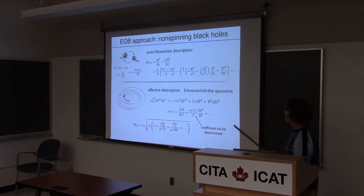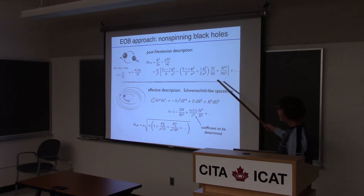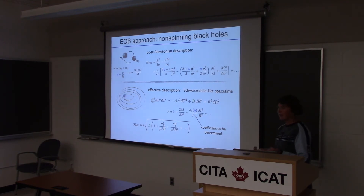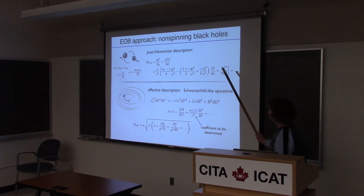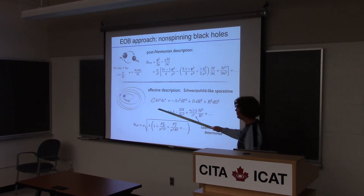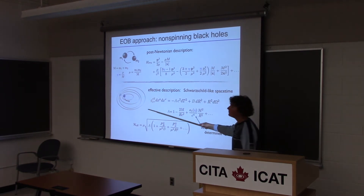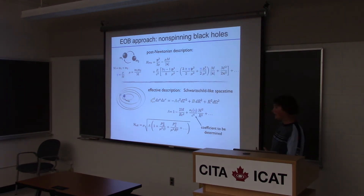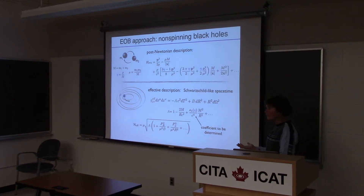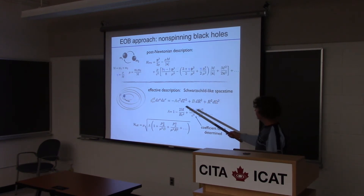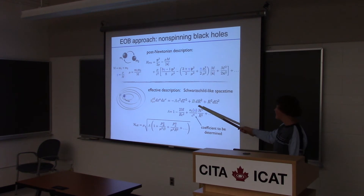Instead of dealing with this, where higher order terms keep being added but the series never converges to give a good solution, let's do something different: consider something analogous to the motion of the reduced mass in some background space-time. We know from the test particle limit that the background space-time should be that of a non-rotating black hole — a Schwarzschild-like space-time. The metric has a simple form with metric potentials A and B, and an angular spherically symmetric part.